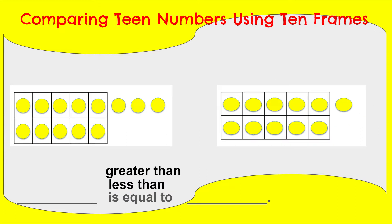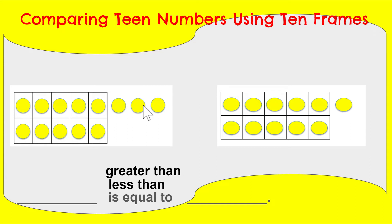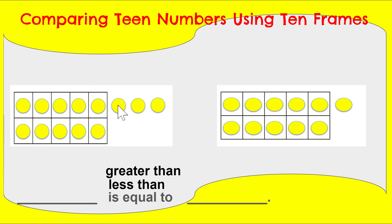Let's do the next one. In this group over here, I see 10 and three more — one, two, three. I know 10 and three more makes 13. Or I could count on: 10, 11, 12, 13. And then in this group over here, I have my 10 and one more, which is 11. Excellent job, boys and girls. So we have 13 and 11. So is 13 greater than 11, is 13 less than 11, or is 13 equal to 11?